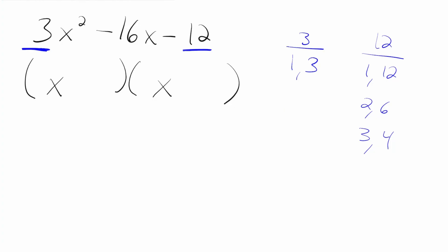Now we're going to enter into the trial and error phase of the problem where we do a lot of little testing. We're going to choose a factoring pair from each of the two columns, and we're going to choose the factors that are closest together because those are usually the correct answer — not always, but usually. So in this case we're going to choose 1 and 3, and we're going to choose 3 and 4.